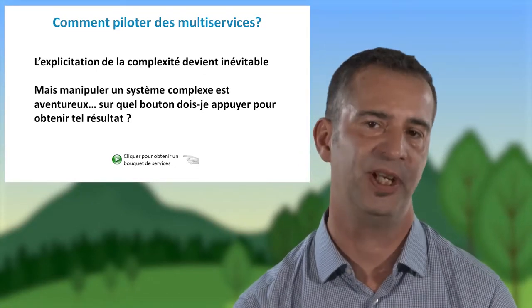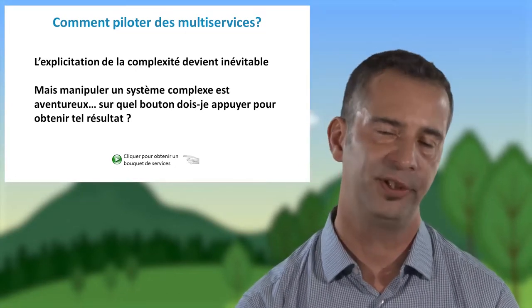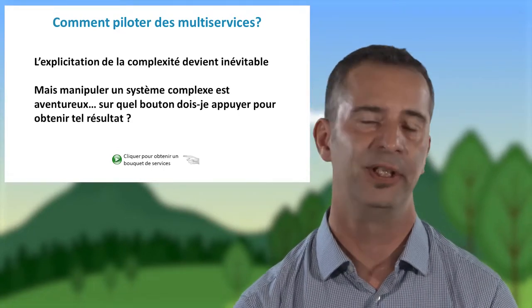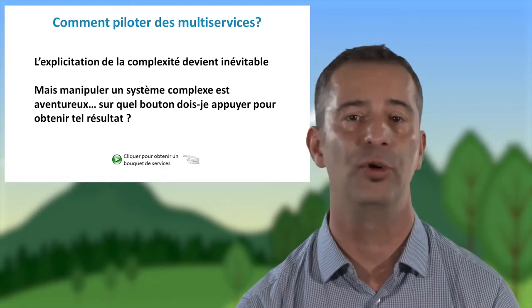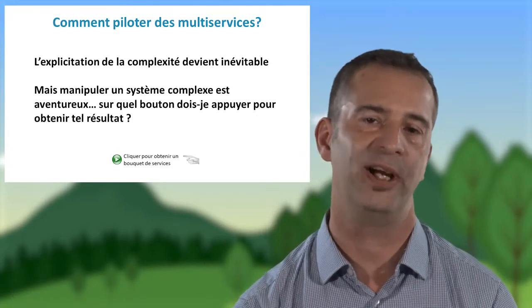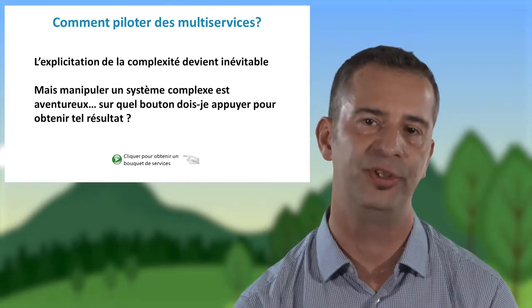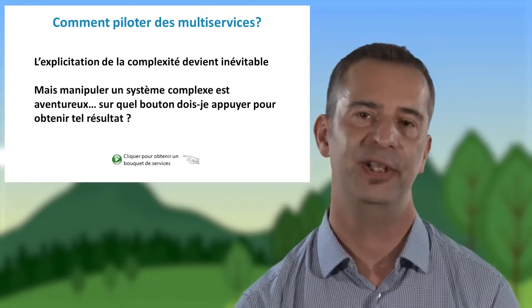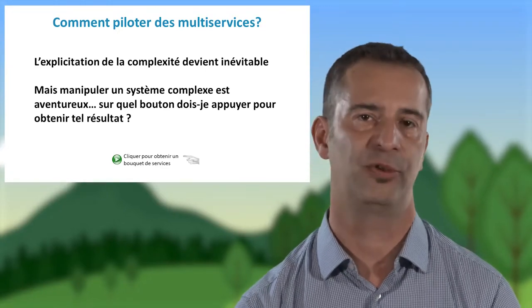Planter des arbres en ville apporte des services, comme le rafraîchissement, mais également potentiellement des disservices. Ces arbres en ville peuvent augmenter les allergies aux pollens, par exemple. Il faut donc regarder ces seuils et ces compromis, avec un but ultime qui est d'essayer de fournir des indicateurs pertinents de la multifonctionnalité.